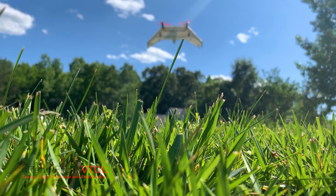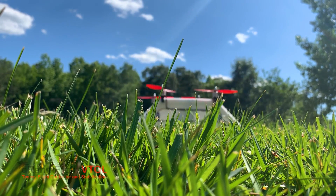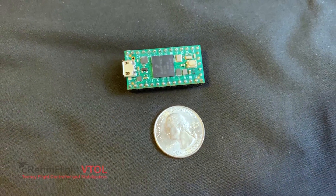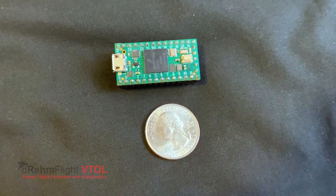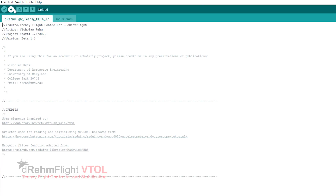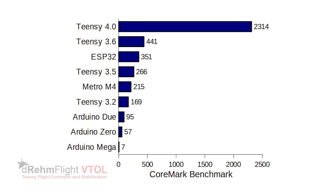Arduino type projects allow for this type of customization, but Arduino boards just haven't been quite fast enough to run flight control code without advanced optimization techniques. That's where the Teensy 4.0 microcontroller comes in. The Teensy works identically to an Arduino — you even upload code to it through the Arduino IDE along with the Teensyduino add-on. The difference is that it runs at 600 megahertz, compared to something similarly sized like an Arduino Nano that runs at only 16 megahertz.